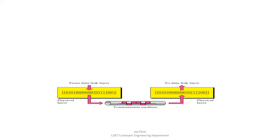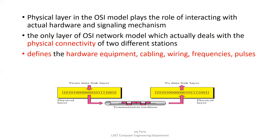It is the responsibility of the physical layer to decide what kind of signal to generate for data transmission. The physical layer is the first layer of the OSI model, and it defines hardware equipment, cabling, wiring, frequency, and pulses.